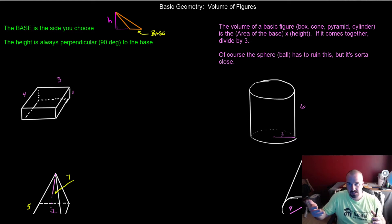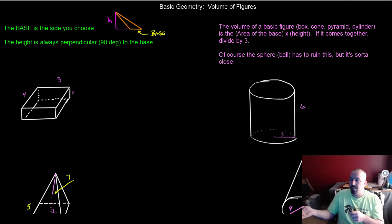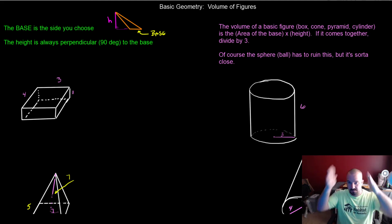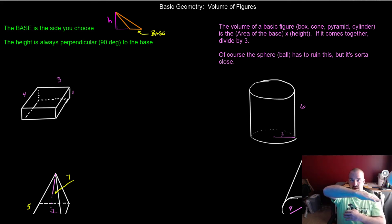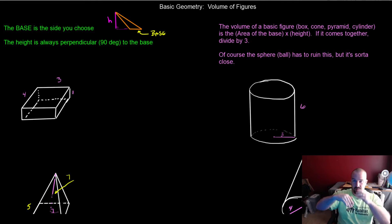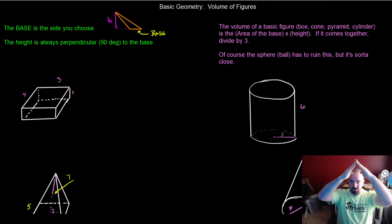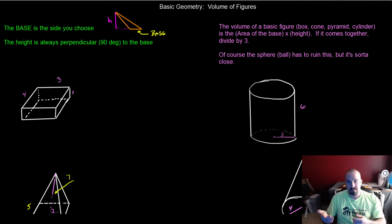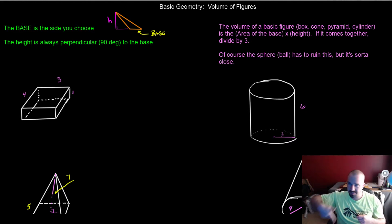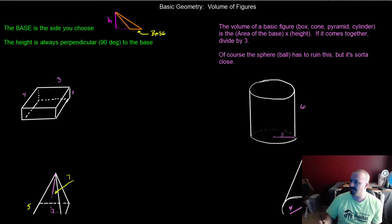If you have a true pyramid or a true cone and it comes together, just divide by 3. Hopefully later on I'll be able to get some audio in there to show you how I remember that and how I teach it. The sphere, because circles have to be different than literally everything else, has to be handled differently.